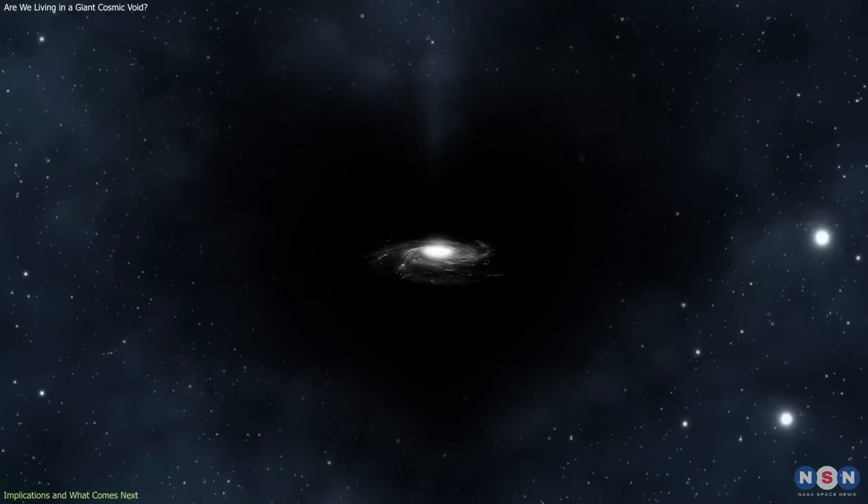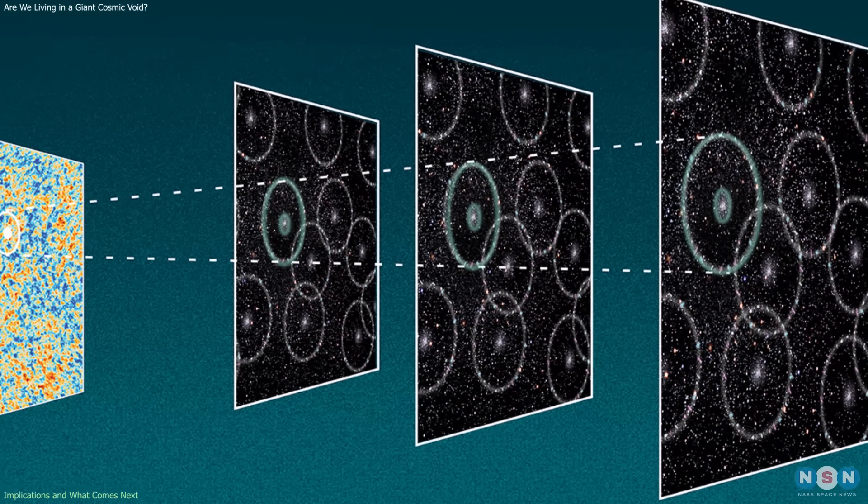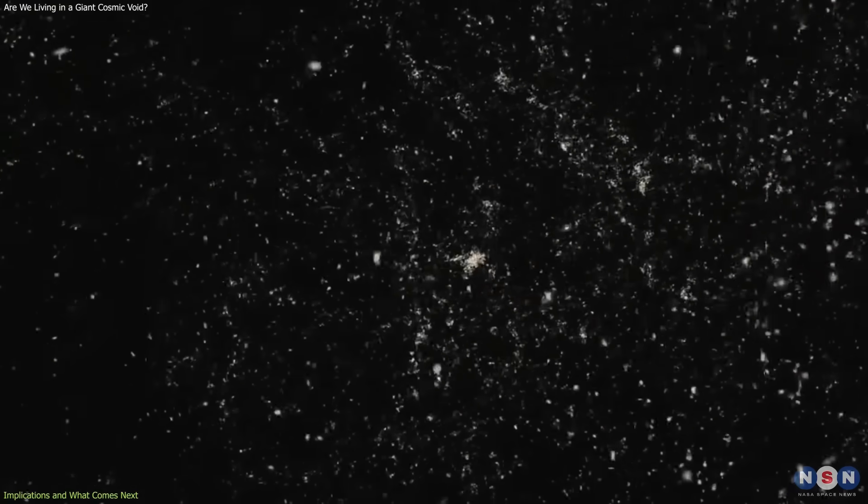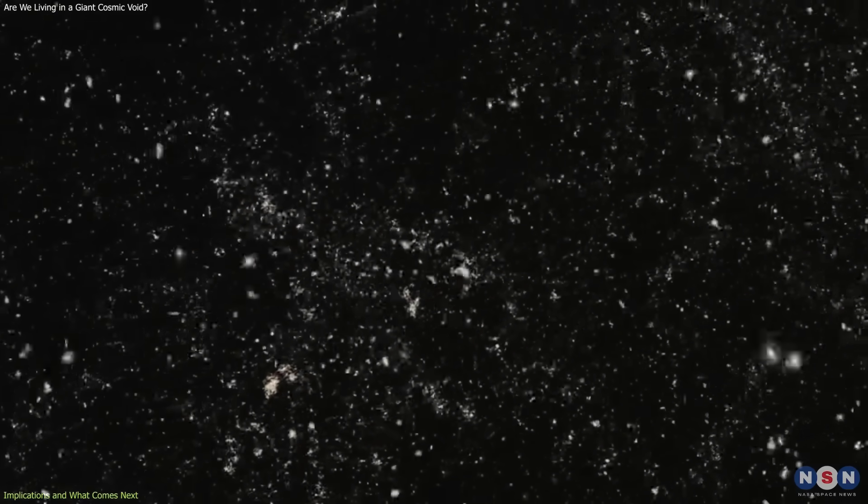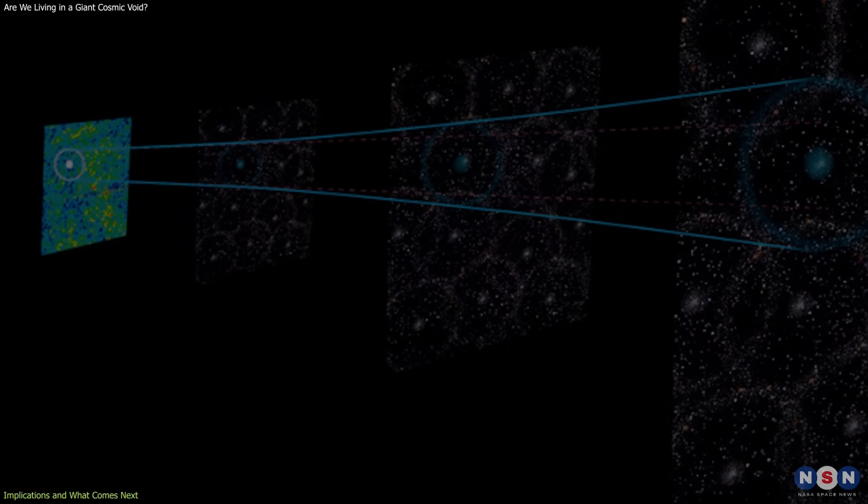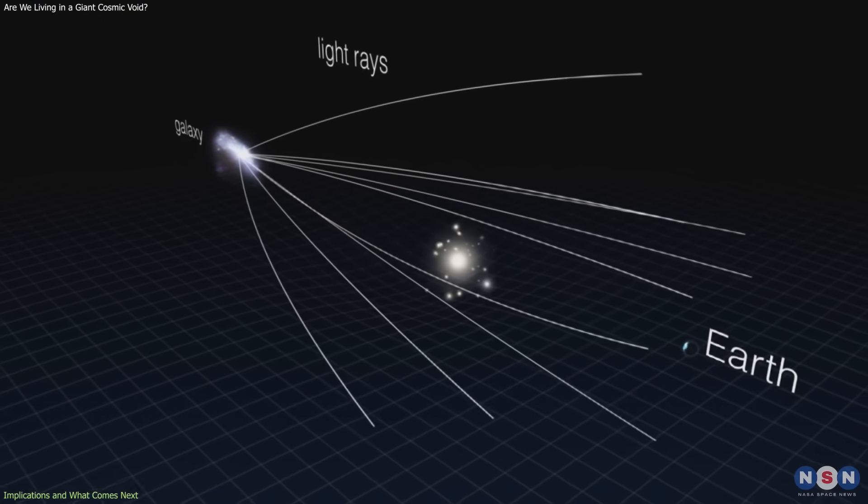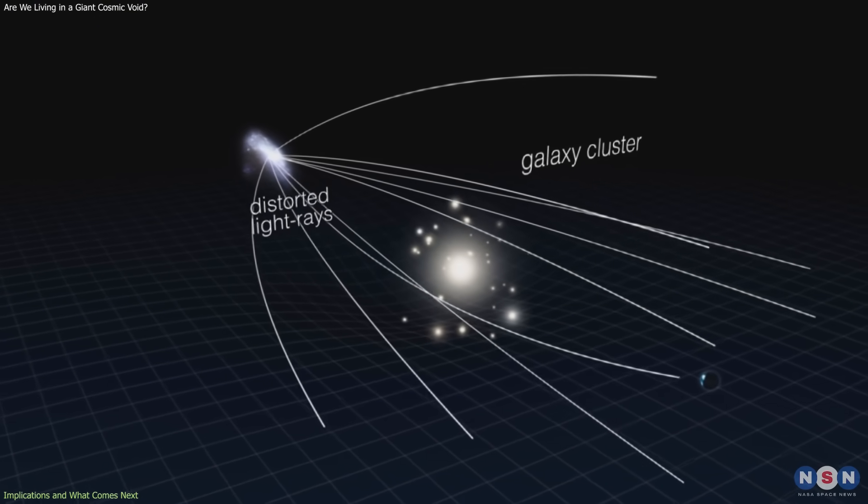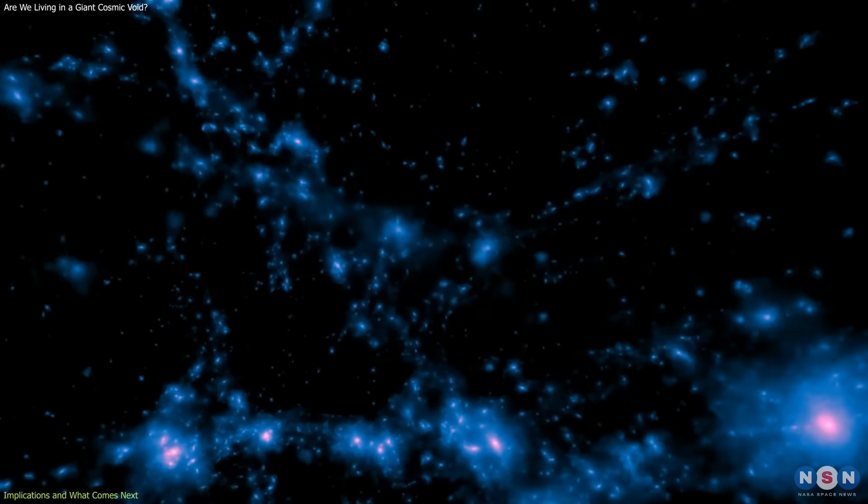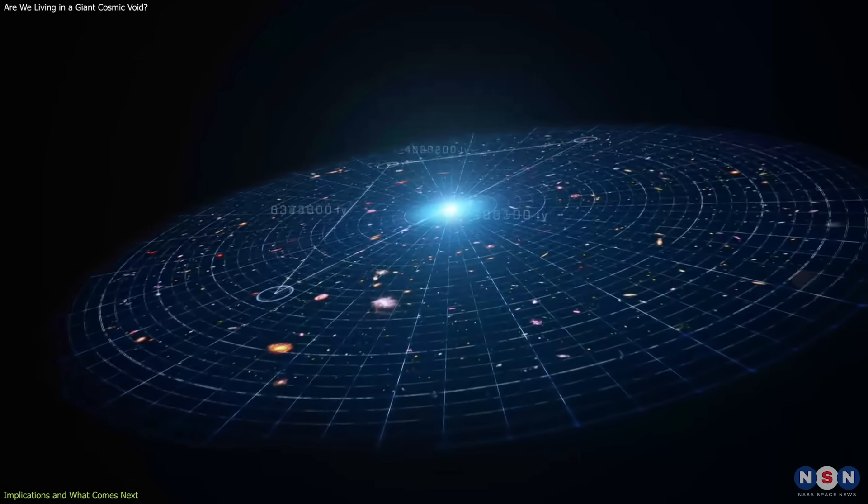Most importantly, the void hypothesis makes clear and testable predictions. The BAO standard ruler should continue to show characteristic distortions at low redshift. Future galaxy surveys with higher precision and broader sky coverage will be able to test this prediction directly. Independent observational probes will also play a key role. Gravitational lensing measurements can constrain how mass is distributed along the line of sight. Galaxy velocity fields can reveal large-scale flows of matter. Stellar age estimates can place limits on how cosmic expansion has evolved over time.